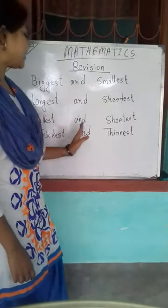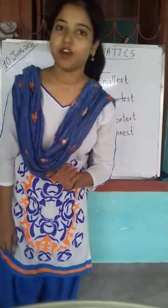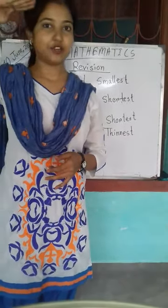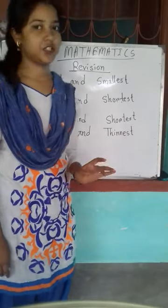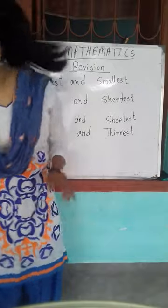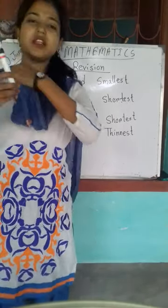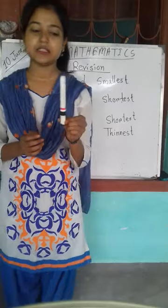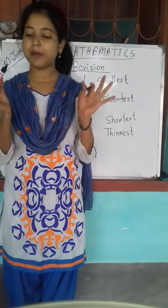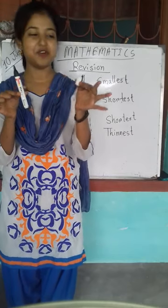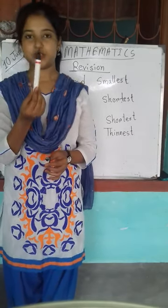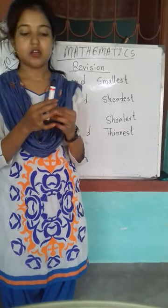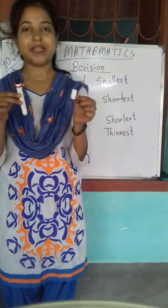Now next is Tallest and Shortest — tall and short, and from there, tallest and shortest. When we are measuring height, tallest and shortest is used. For tallest, I have this pen only. When there are two objects — pen cap and pen — I can say the pen is tall and the pen cap is short, because we are measuring the height.